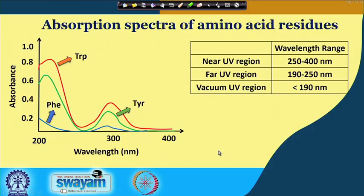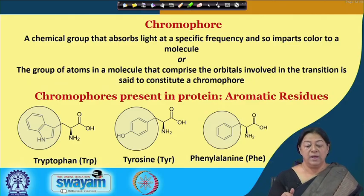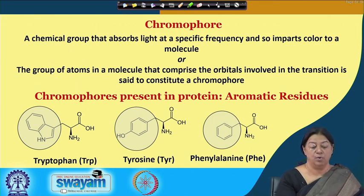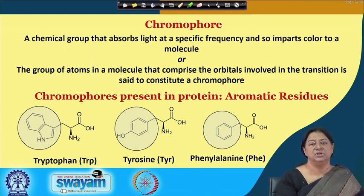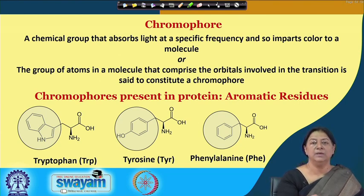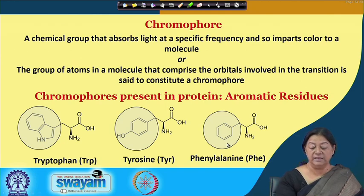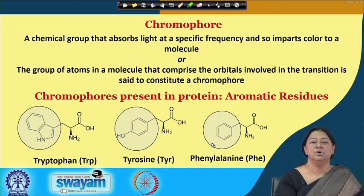We will revise some topics covered in the last lecture, where we understood what we meant by a chromophore — a chemical group that absorbs light at a specific frequency and imparts color to a molecule. In the electromagnetic spectrum we have UV, visible, and infrared. The energy levels correspond to specific wavelengths, and the protein chromophores — the aromatic amino acid residues tryptophan, tyrosine, and phenylalanine — absorb in the UV region.